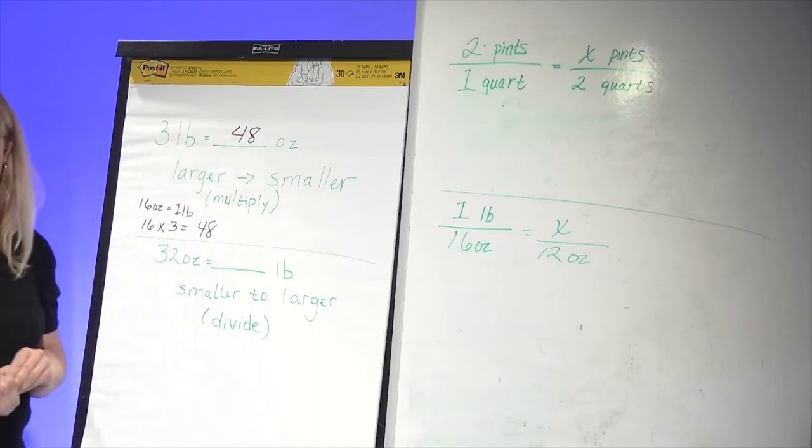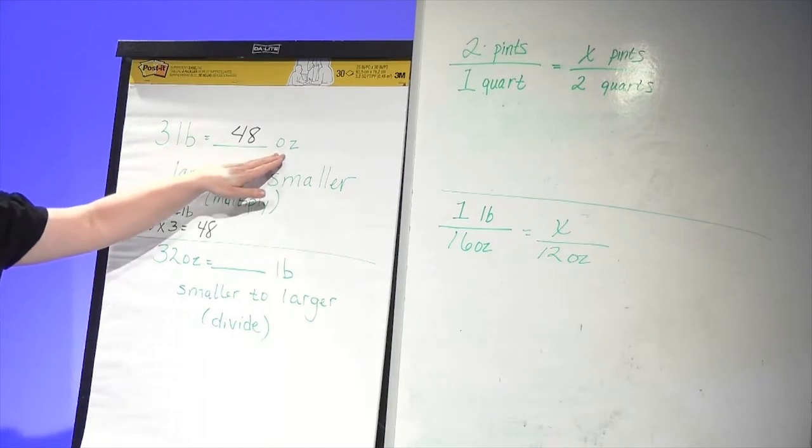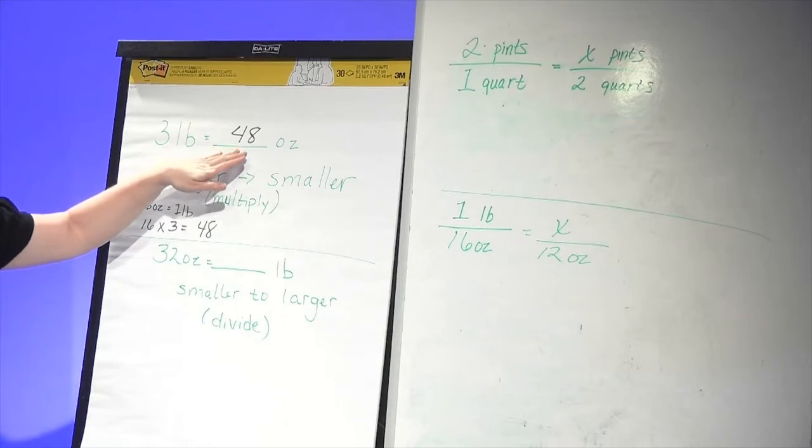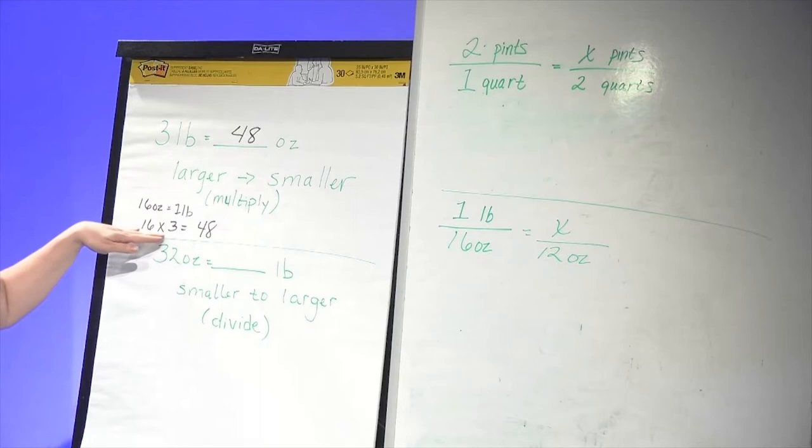Again, think about if your answer is reasonable. Ounces are smaller than pounds. So it makes sense that this number is larger because we're talking about two equal units. This one's in pounds, this one's in ounces. Ounces are smaller, so that's why we multiplied. Again, you can set this up like a proportion or you can do this. You have to use the way that works better for you.